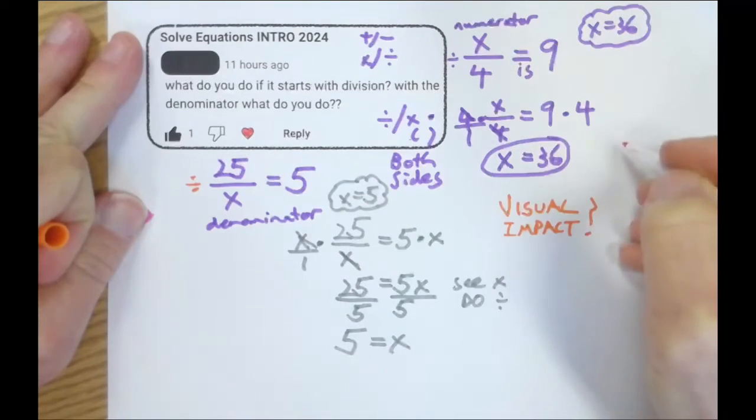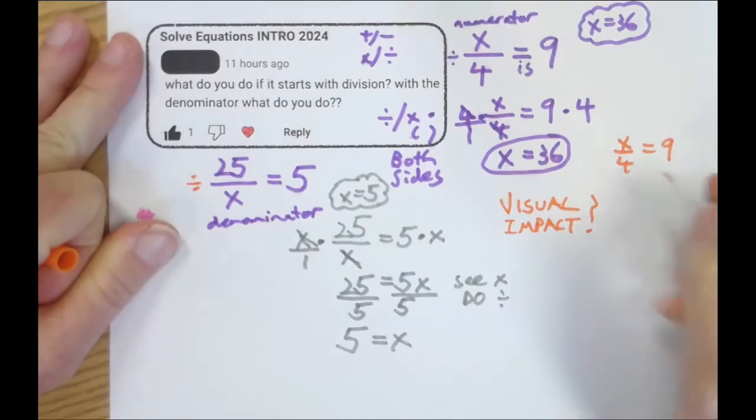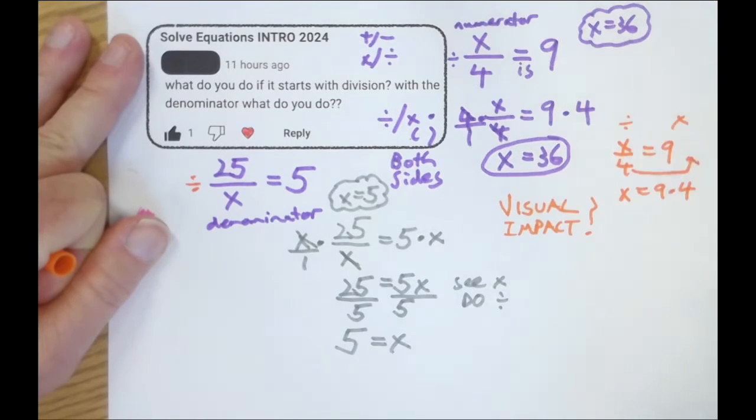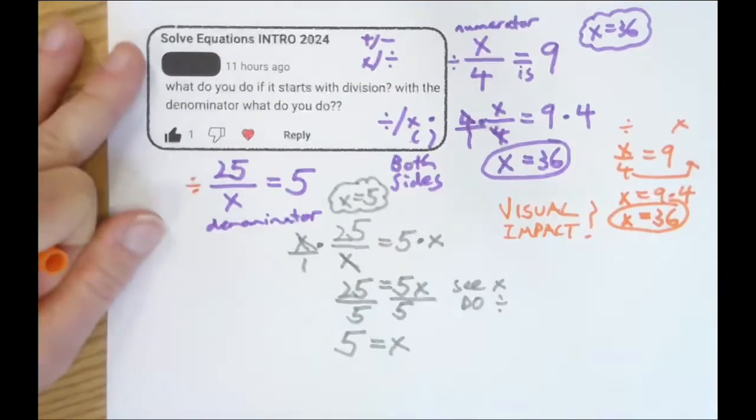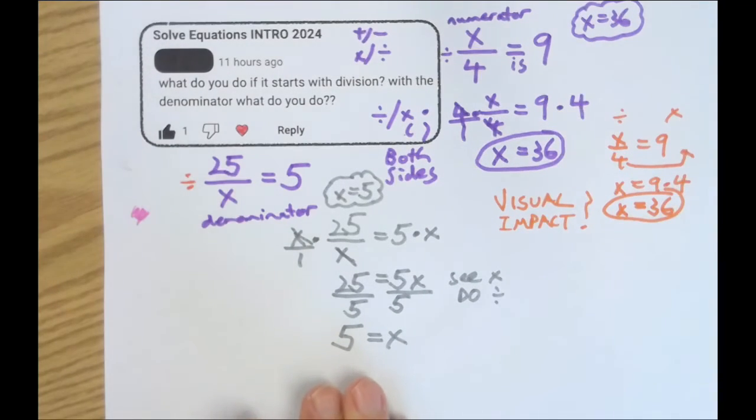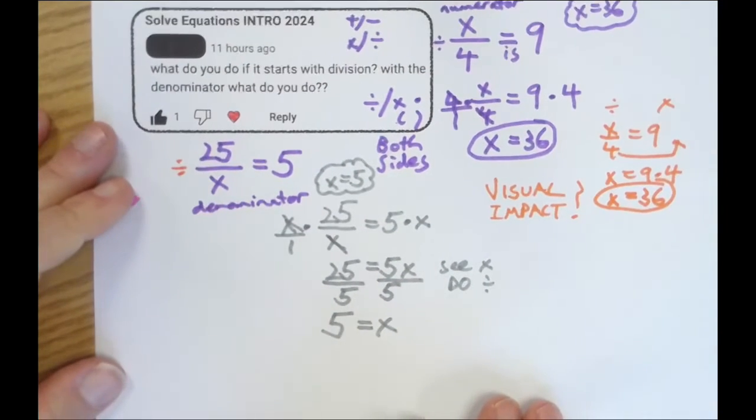We started here with x over 4 equals 9. And what we ended up with was x equals 9 times 4. So the denominator, instead of being something we're dividing by, moved to the other side and became something we're multiplying by. So the visual impact was the 4 was there. Now it's here. And instead of dividing, we're multiplying. Boom. I think you could trust that and do that every time. And this is a perfectly fine way of showing your work. If you have a teacher who's kind of a curmudgeon about that, like me.